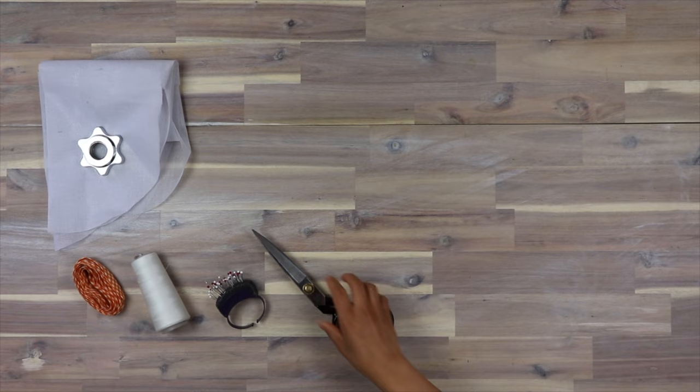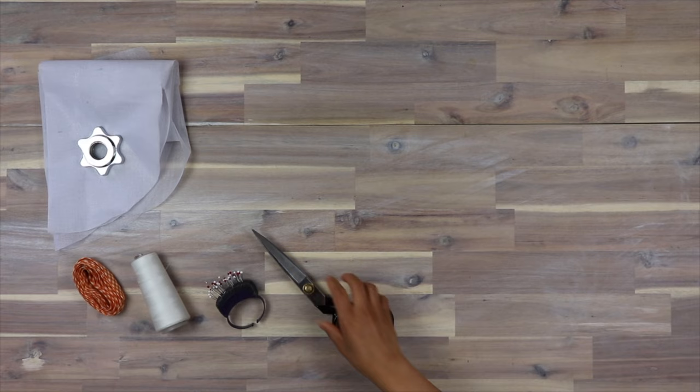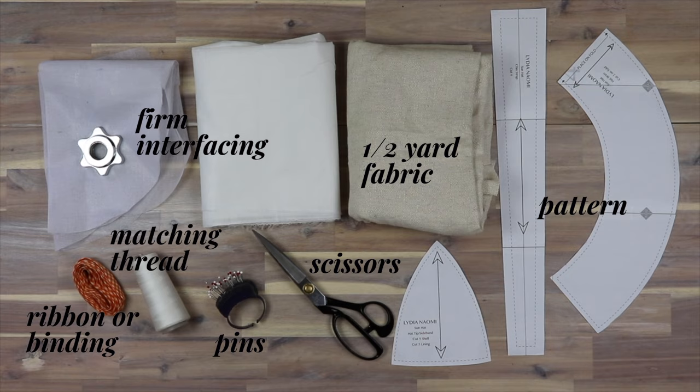For materials you'll need firm interfacing, fabric, my pattern, scissors, matching thread, pins, and a 26 inch or 66 centimeter long piece of ribbon.